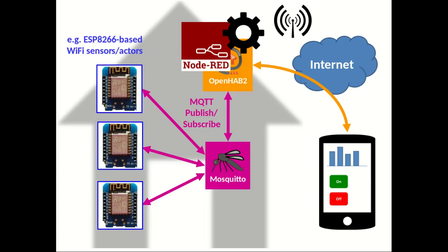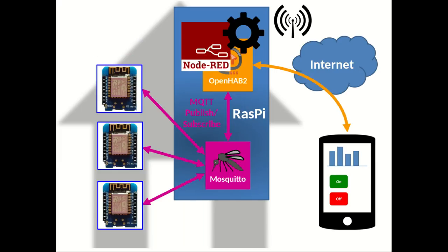Whatever solution you choose, you need some implementation container for the broker and the home automation server. In most solutions you would end up with a Raspberry Pi - it is powerful enough to host both of them, and it is typically small enough to be hidden somewhere in your home and running all of the time.